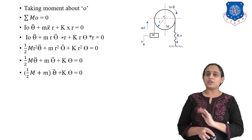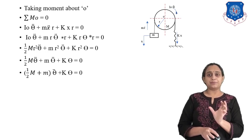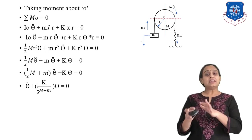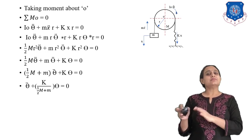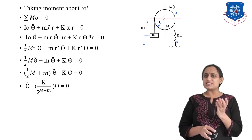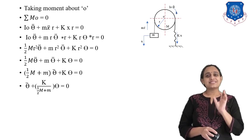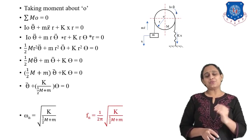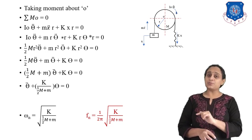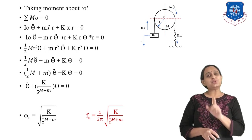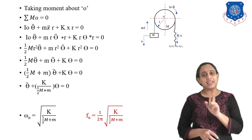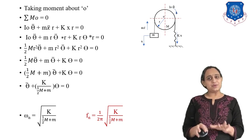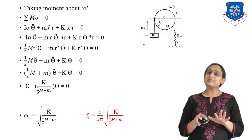Dividing by (½M + m), we get the standard form: θ̈ + K/(½M + m)·θ = 0. This is the standard result for this torsional numerical problem.